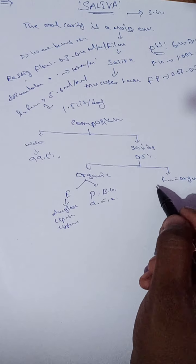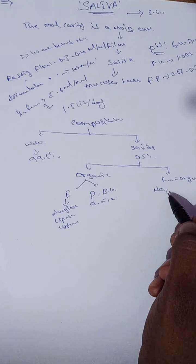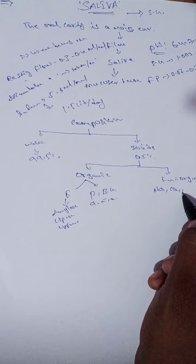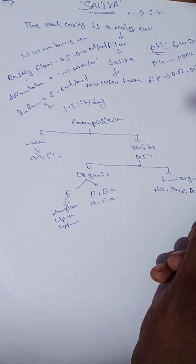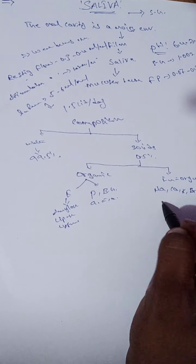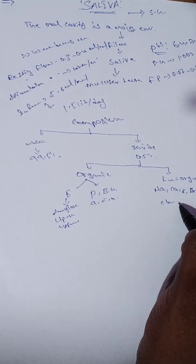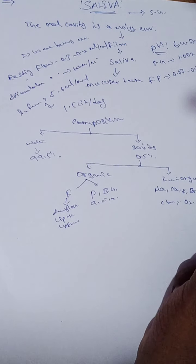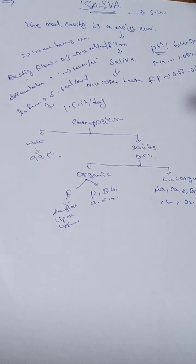Inorganic substances include sodium, calcium, potassium, bicarbonates, bromides, and chlorides. Additionally, oxygen, carbon dioxide, and nitrogen are also present in the solids of saliva composition.